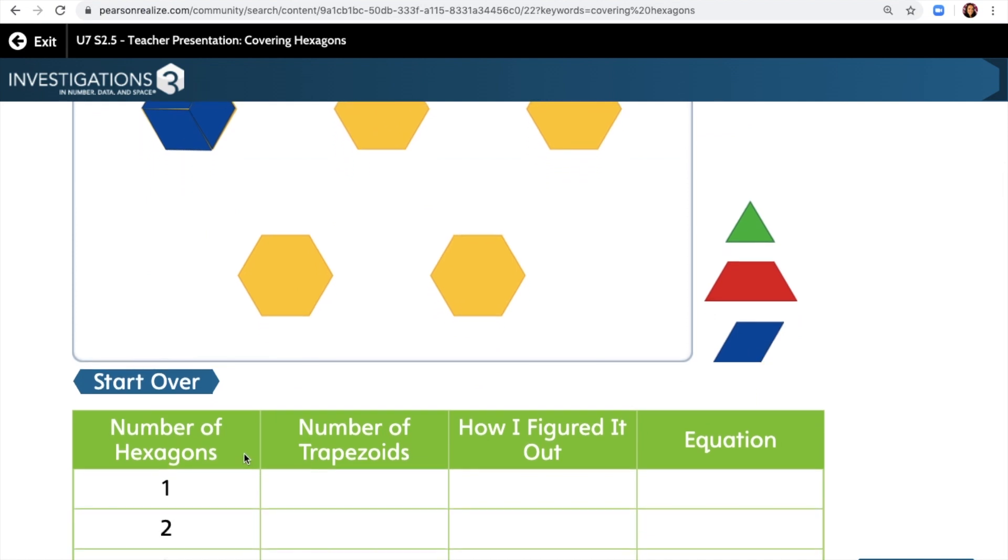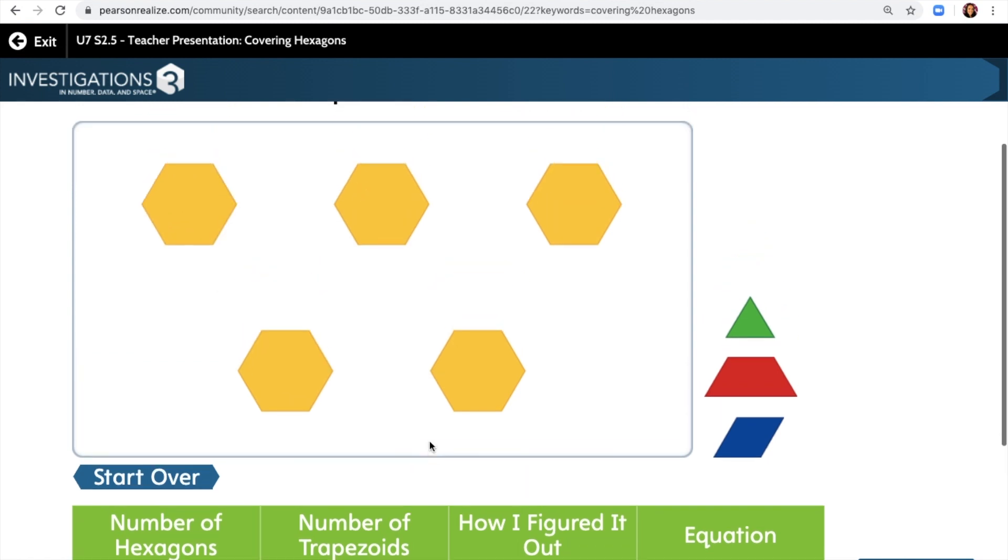Down here it says number of hexagons and number of trapezoids. So let's try this next one. If I take one of these trapezoids, I can see that one trapezoid is one half of a hexagon. So I need to use that tool to turn this one.